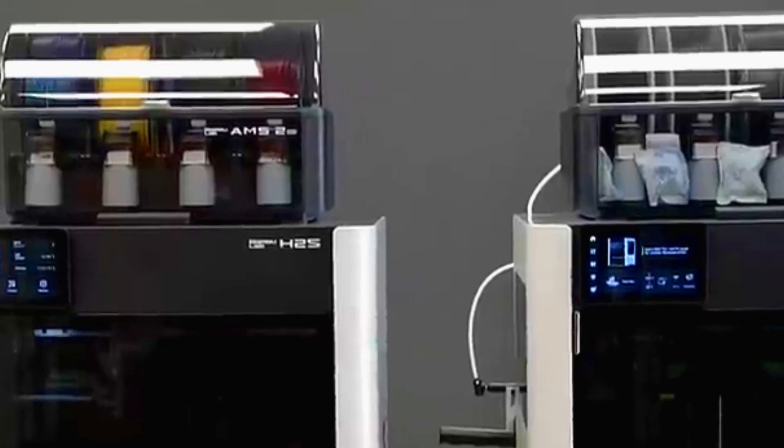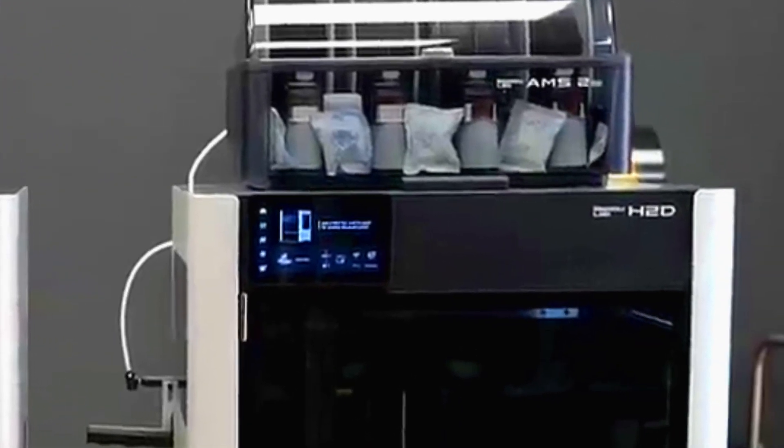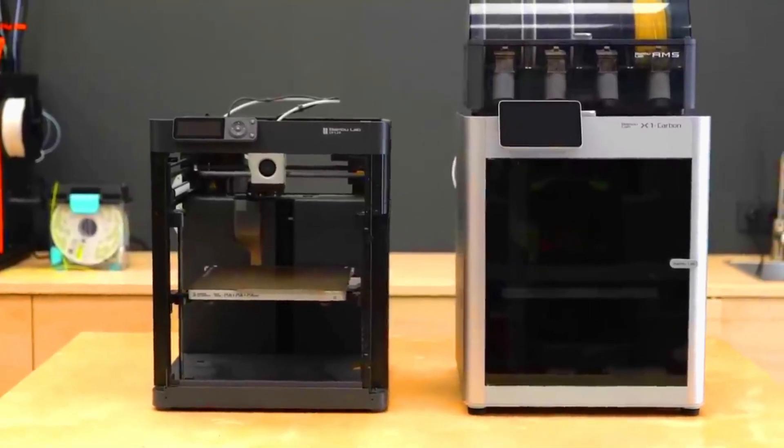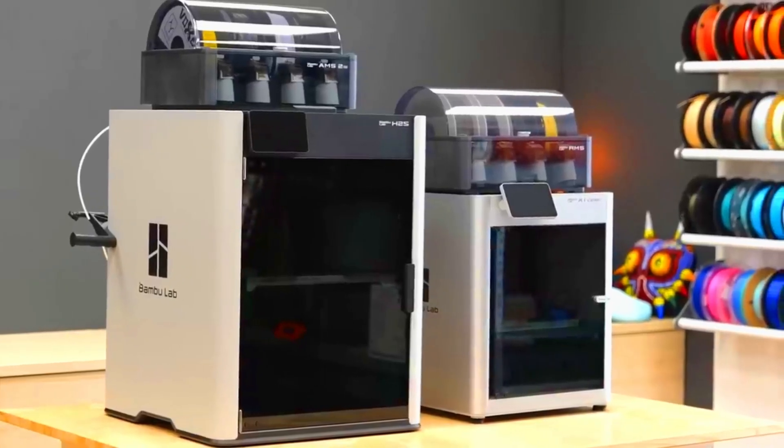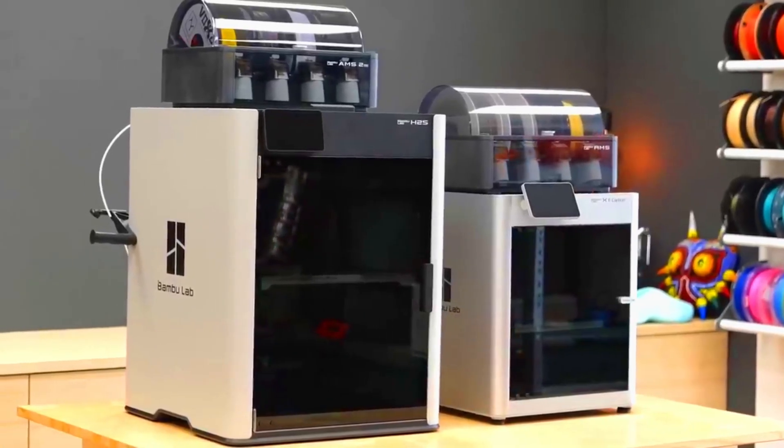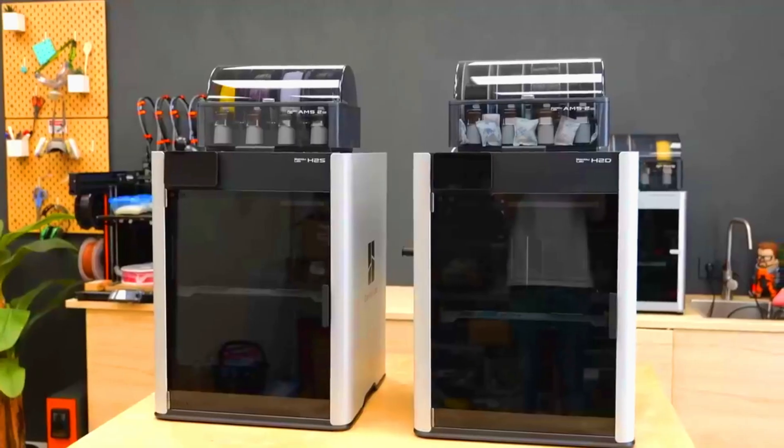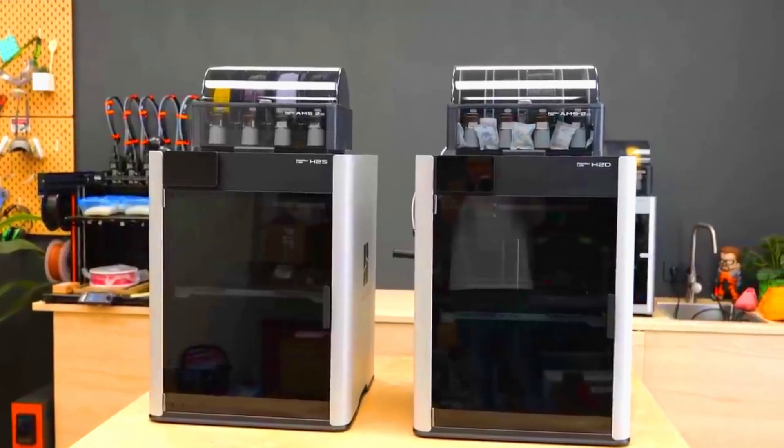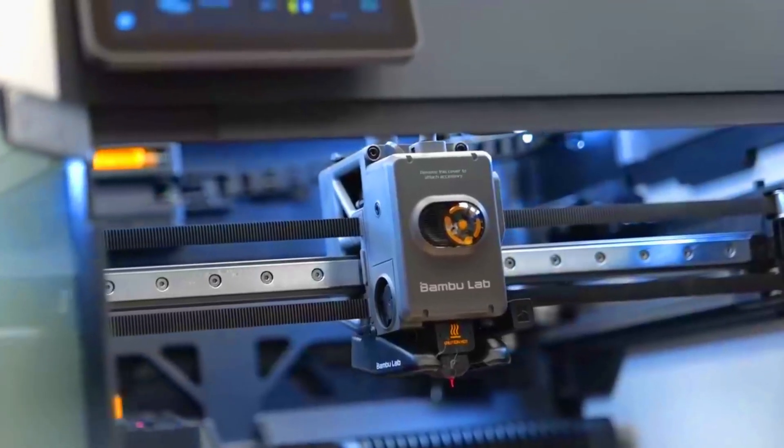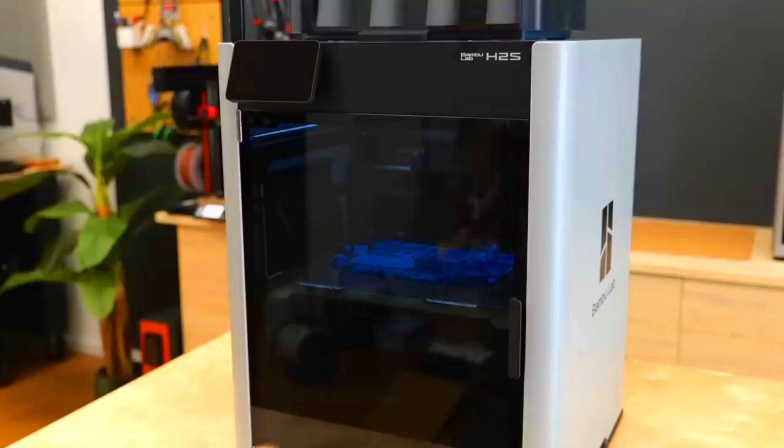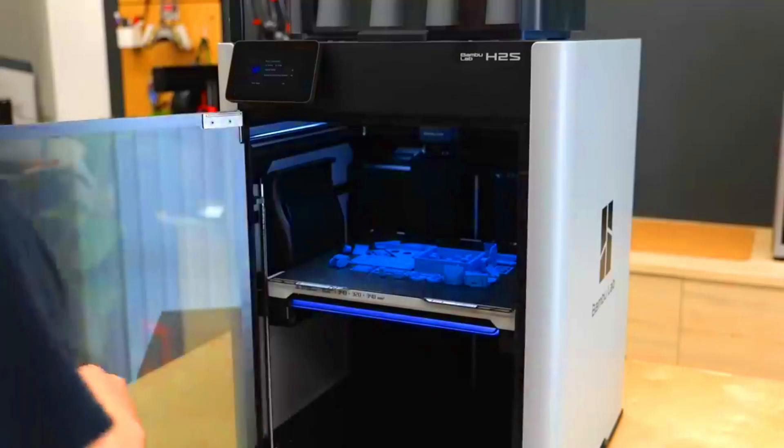It would be a stripped down budget version of the X2D, much like how the P1P followed the X1 Carbon. A capable machine but with clear compromises to cut costs. We got this H2S and from the outside it looks almost identical to its dual extrusion big brother. The difference, however, is a single fundamental change that redefines this machine's purpose and its price point.